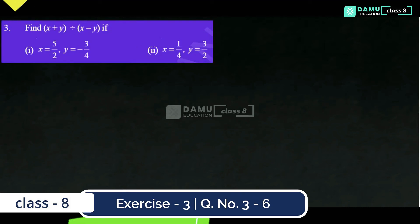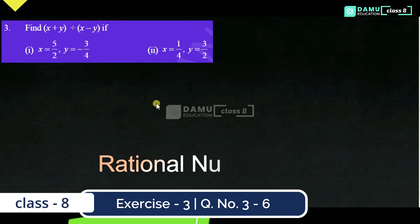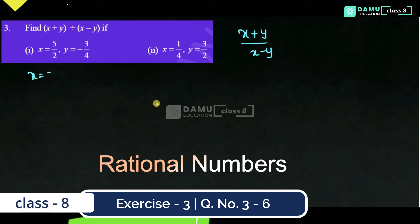In the third question, we have to find x plus y divided by x minus y. Here, what they have given is x equals 5 by 2 and y equals minus 3 by 4. We are going to find x plus y first.